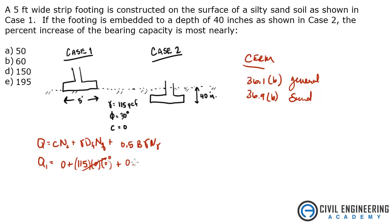Okay, zero, plus 0.5 times b, which is the width of the footing, which is five feet, times 115 pcf, times N gamma.